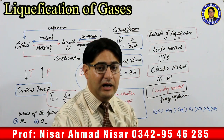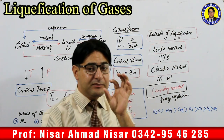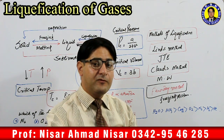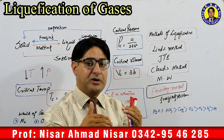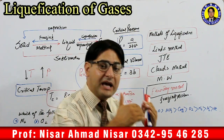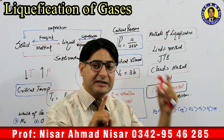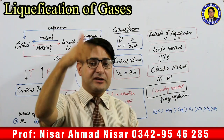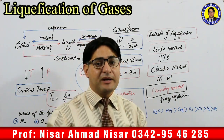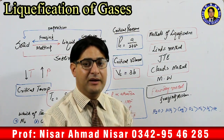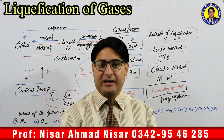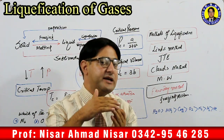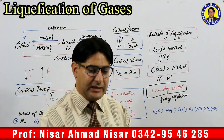At critical temperature and pressure, the volume occupied by one mole of a gas is called the critical volume. Note that critical volume and molar volume are different things. Molar volume is the same for all gases at the same temperature and pressure, but since each gas has a different critical temperature and pressure, the critical volume is also different for each gas. In general, a gas with higher critical temperature also has higher critical pressure; higher temperature increases volume while higher pressure decreases it, so the combined effect must be evaluated.